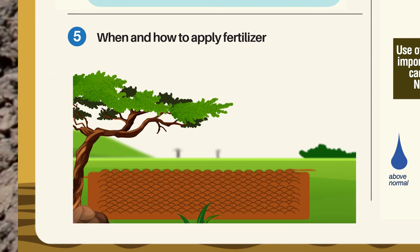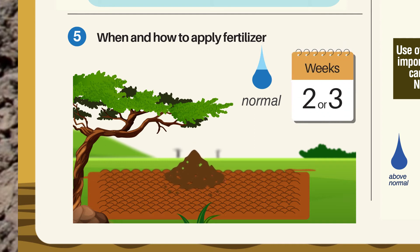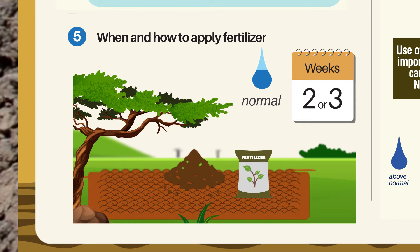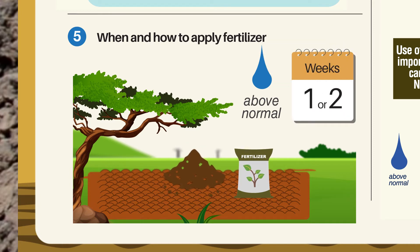When and How to Apply Fertilizer: If rains are predicted as normal to below normal, apply organic fertilizers two to three weeks before planting. Mineral fertilizers should be applied at the right crop stage, usually in two splits when the soil has sufficient moisture. If rains are normal to above normal, apply organic fertilizers one to two weeks before planting in bunds or spread, followed by shallow tillage. Apply mineral fertilizers in three to four splits to avoid loss from excessive soil moisture.